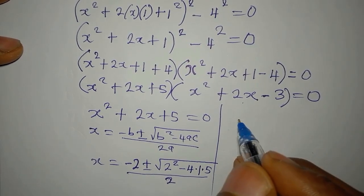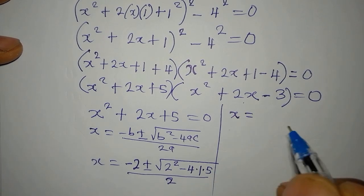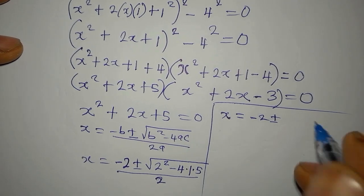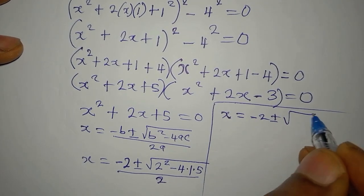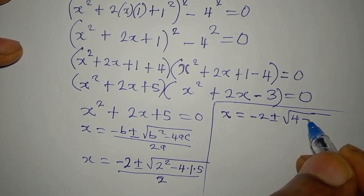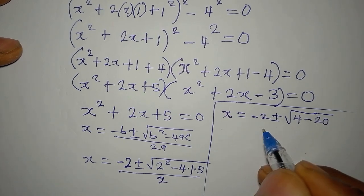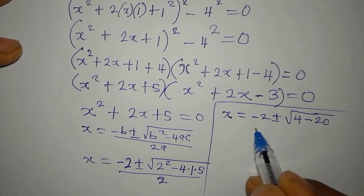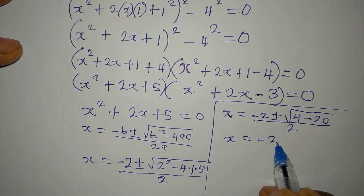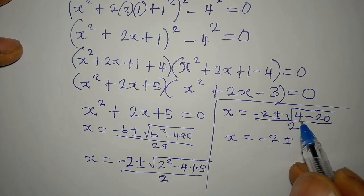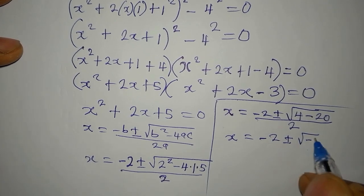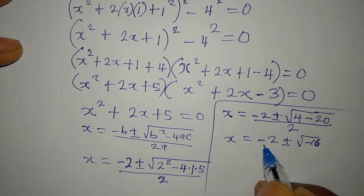Continuing, x equals minus 2 plus or minus square root of 4 minus 4 times 1 times 5. Since 4 times 1 times 5 is 20, we have square root of 4 minus 20, all over 2. That gives square root of negative 16 in the numerator.